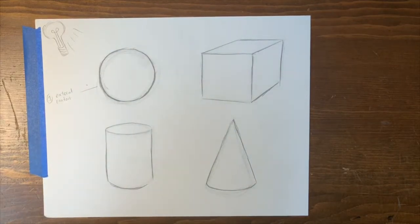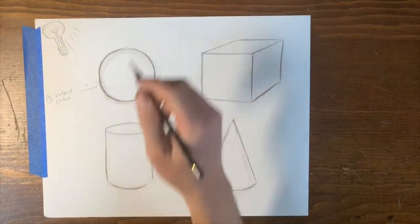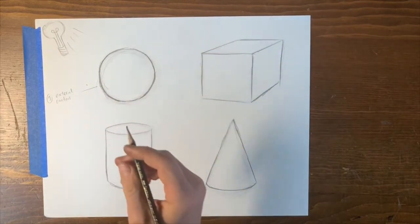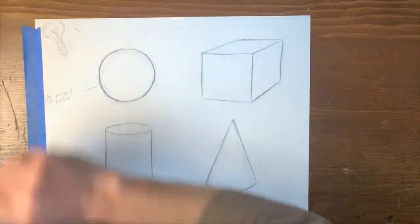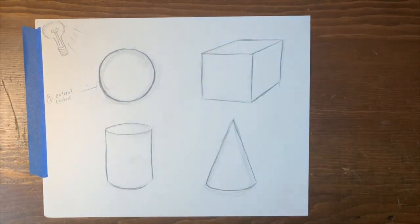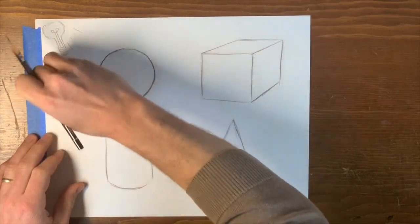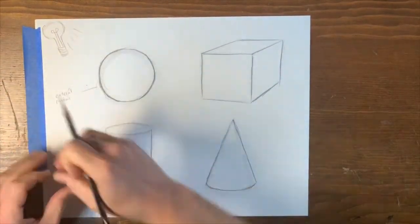You know what? I'm going to backtrack on the number one. And instead of putting in the number one, I'm just going to put an external contour for the moment so that it doesn't get too cumbersome.